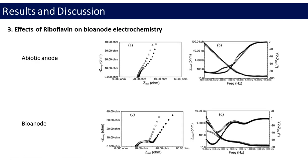The last effect the author studied is effects of riboflavin on bioanode electrochemistry. In figure, A and B show the impedance spectra from the abiotic anode while C and D are bioanode result measured at open circuit. Addition of riboflavin, 1 mM, mainly affected the high-frequency impedance of the abiotic anode and the low-frequency impedance of the bioanode.